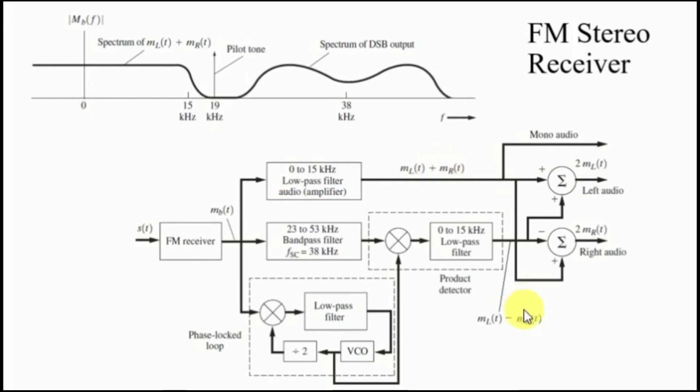Similarly, if you subtract this from the upper branch, ML of t would cancel with ML of t. You would have MR of t and minus MR of t. You would have 2 MR of t which is expressed over here. You would have 2 signals that is the left audio and the right audio appearing at the terminal end of the receiver that is your speaker.